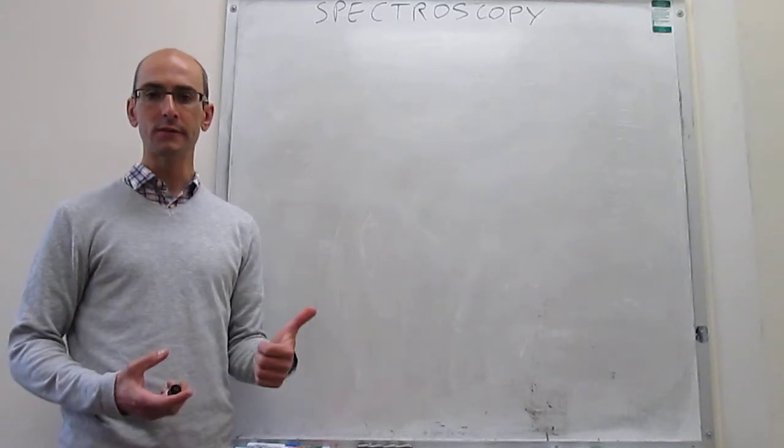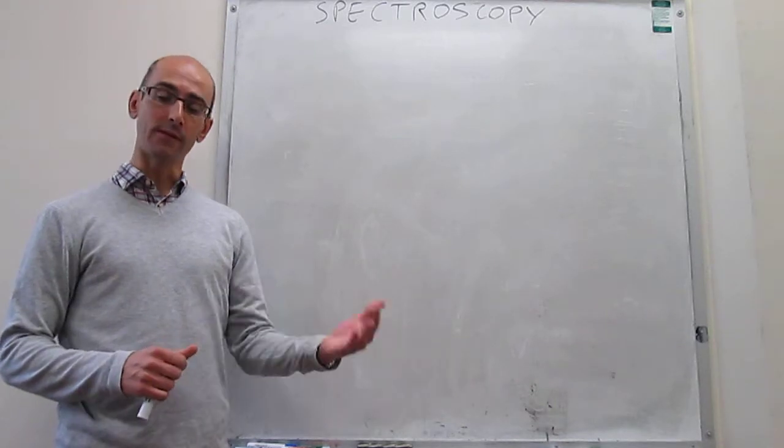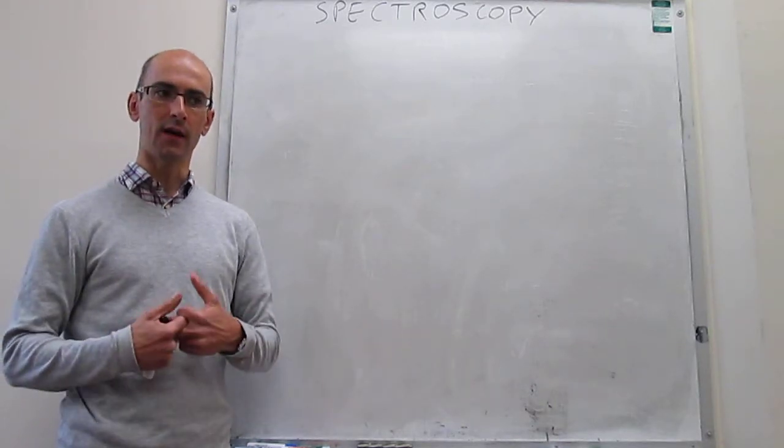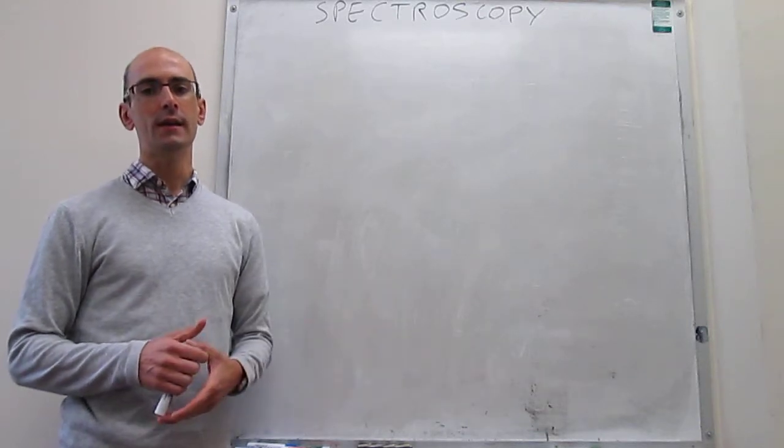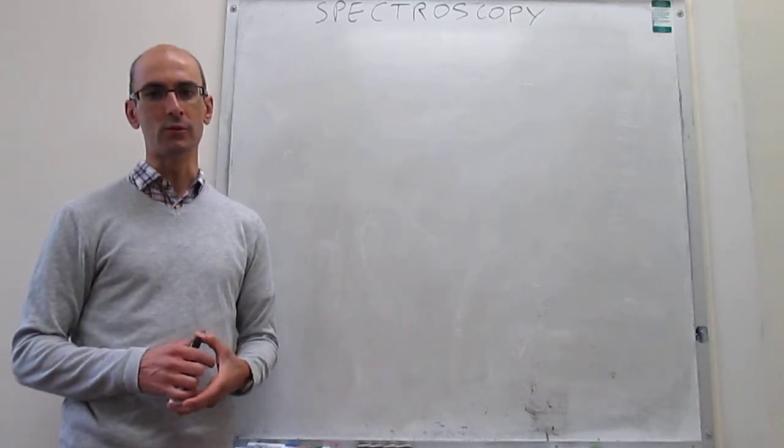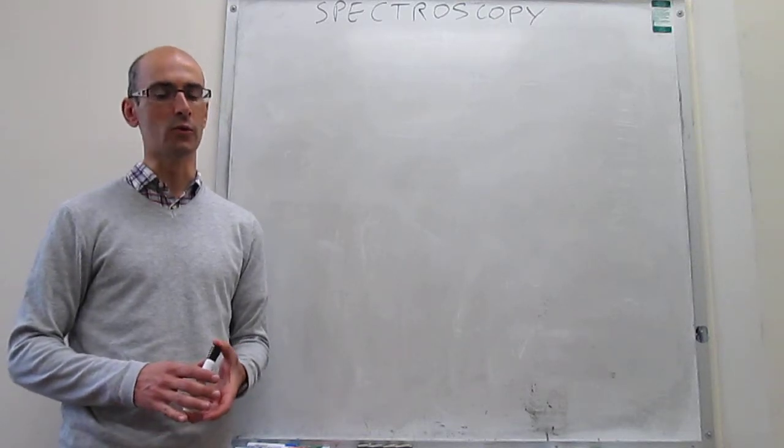One of them is the source of the photons, the source of the electromagnetic radiation. Another one is going to be the detector, which is when we detect the photons transmitted. And there's going to be a third element, which is called a dispersion medium, also called a monochromator.